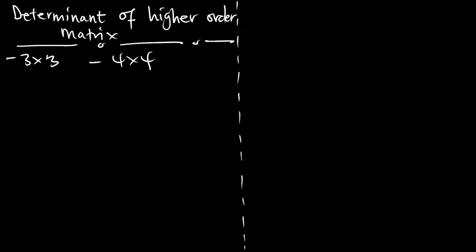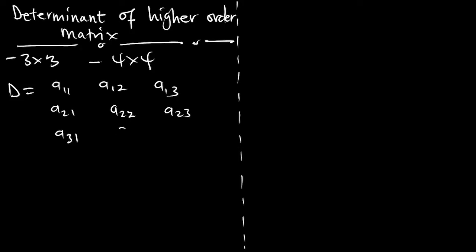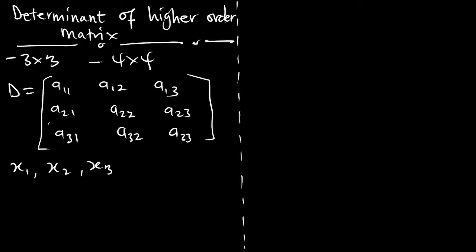Let's assume we have a matrix D where we have A as its members. These are the members for the matrix. We are considering a 3 by 3 matrix this way. We have 3 unknowns. If we are to go by the principal diagonal approach, we have 3 unknowns, which are x1, x2, and x3. The 2 by 2 approach will not work here.